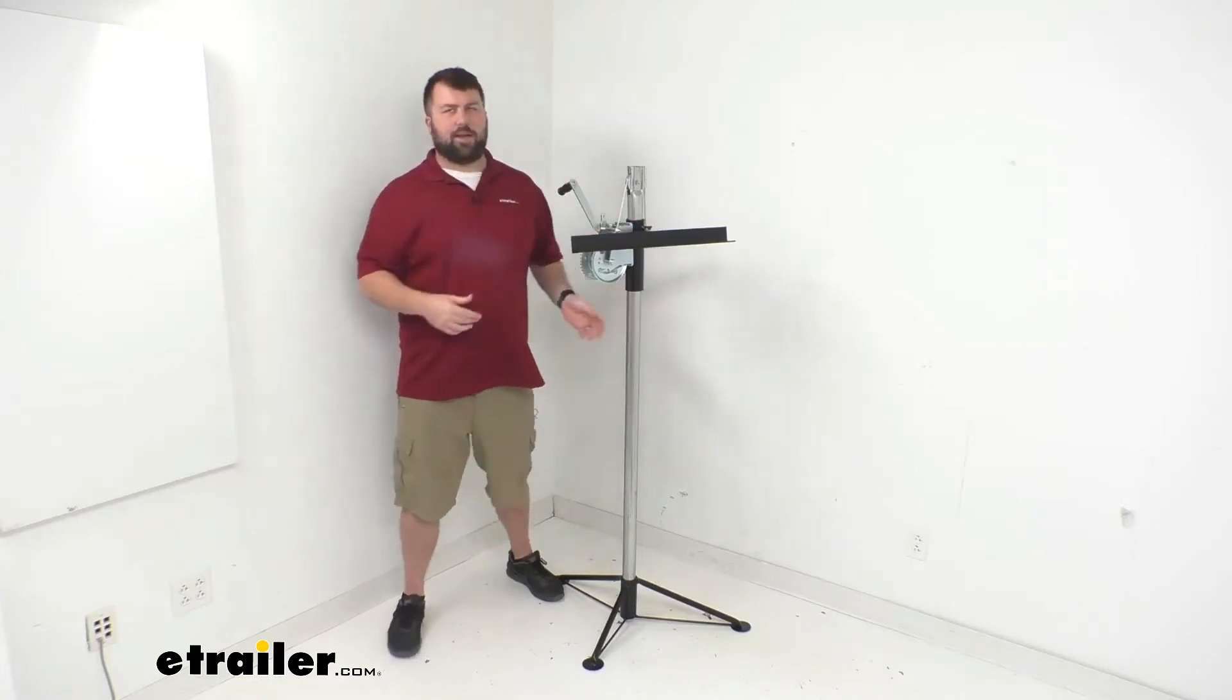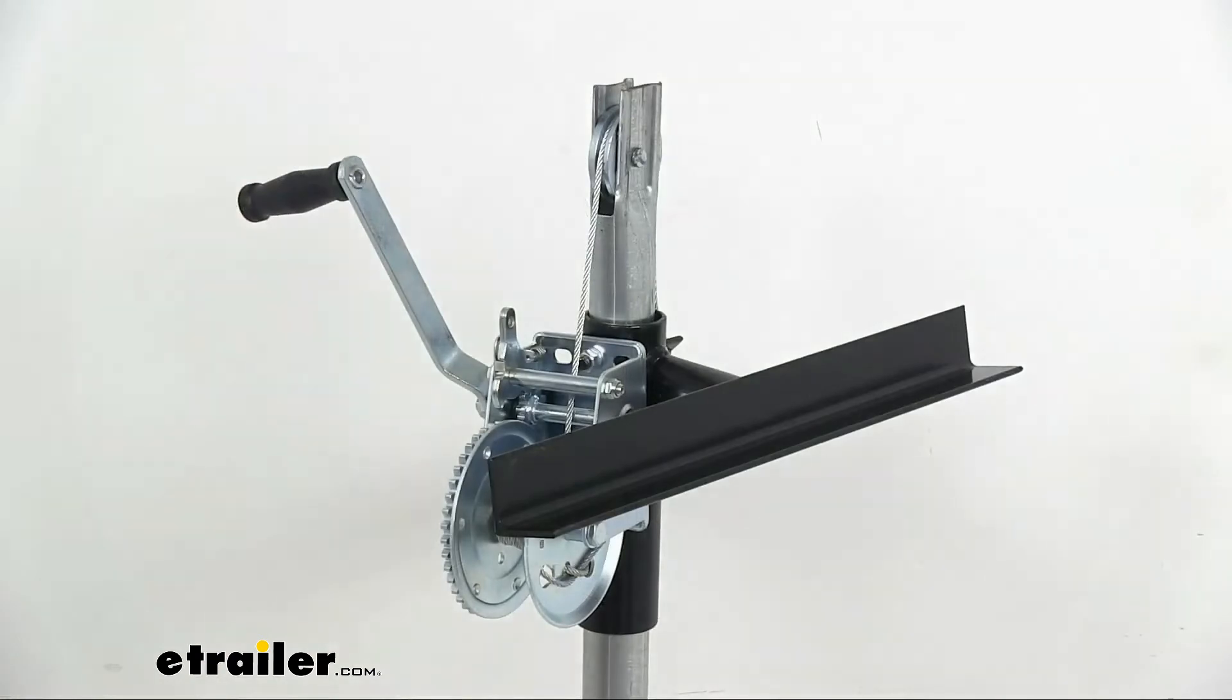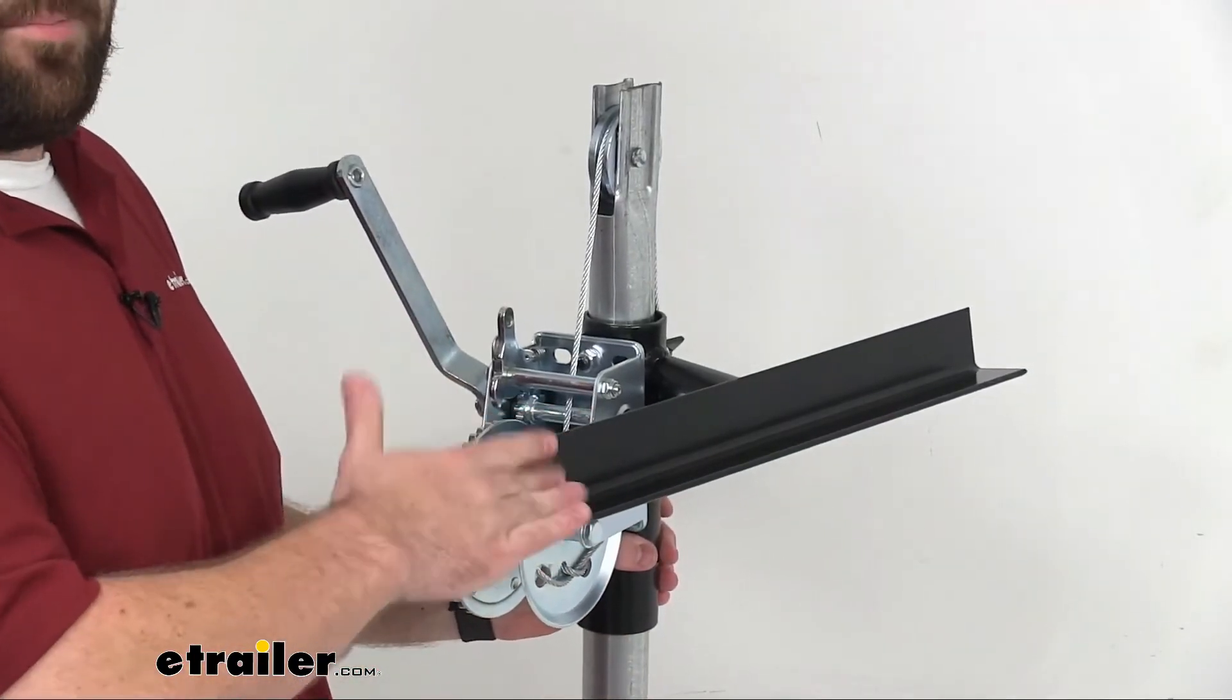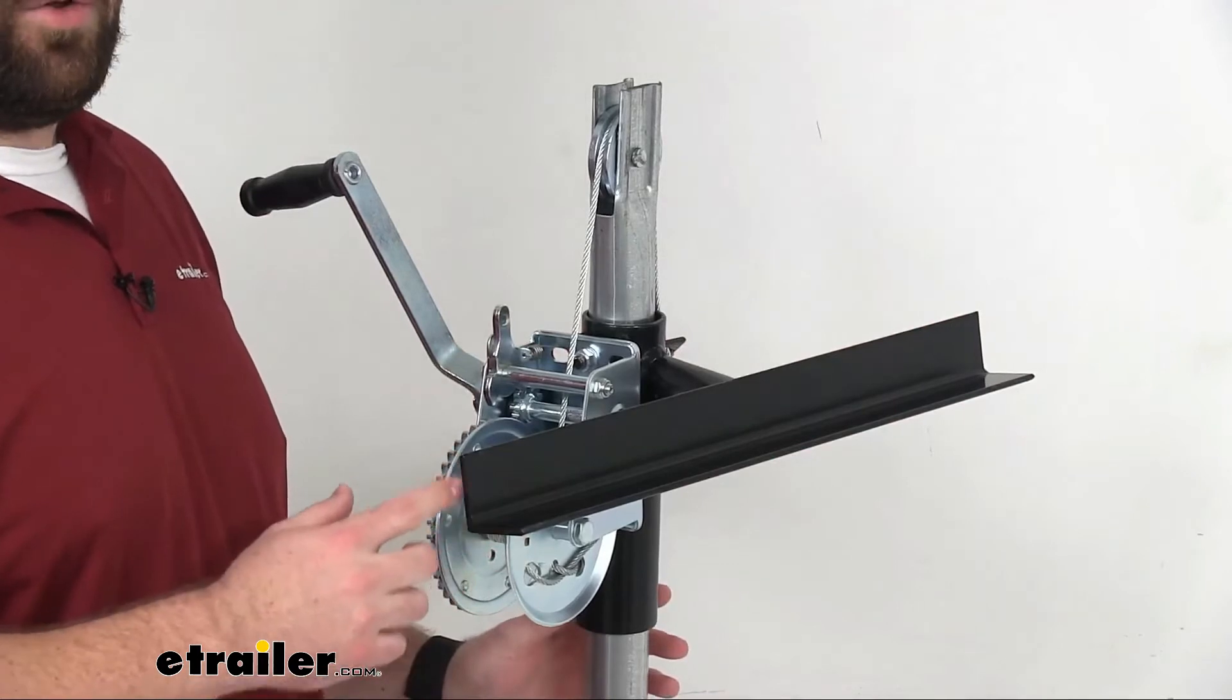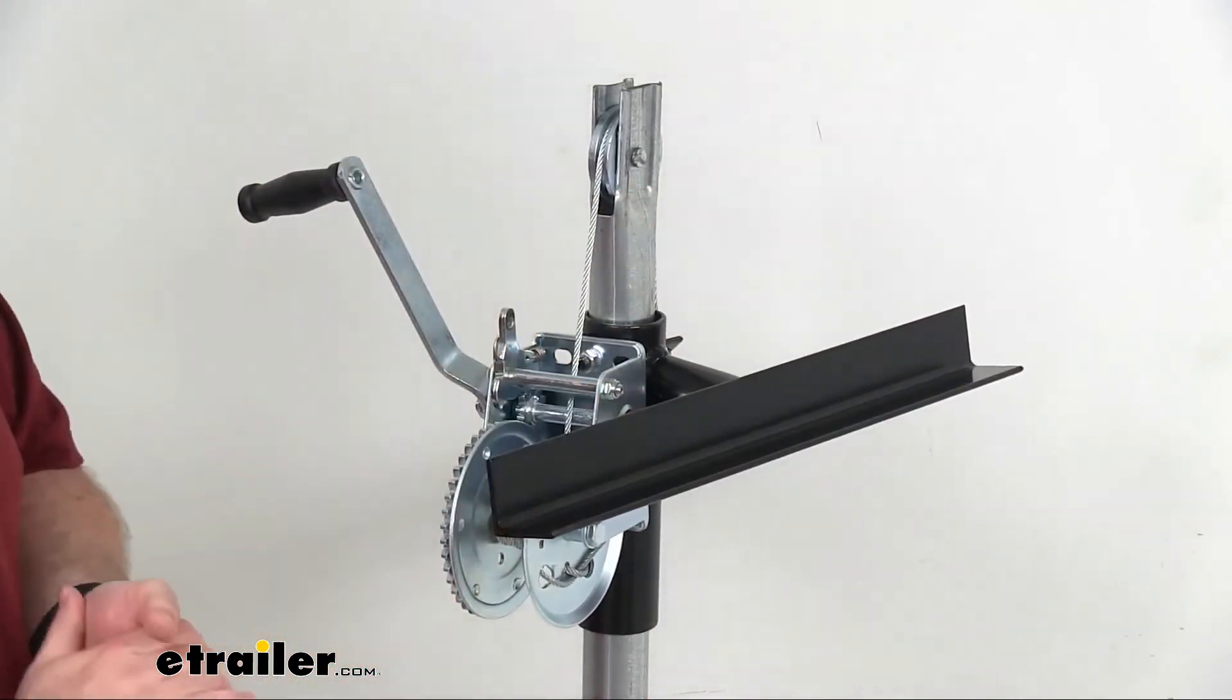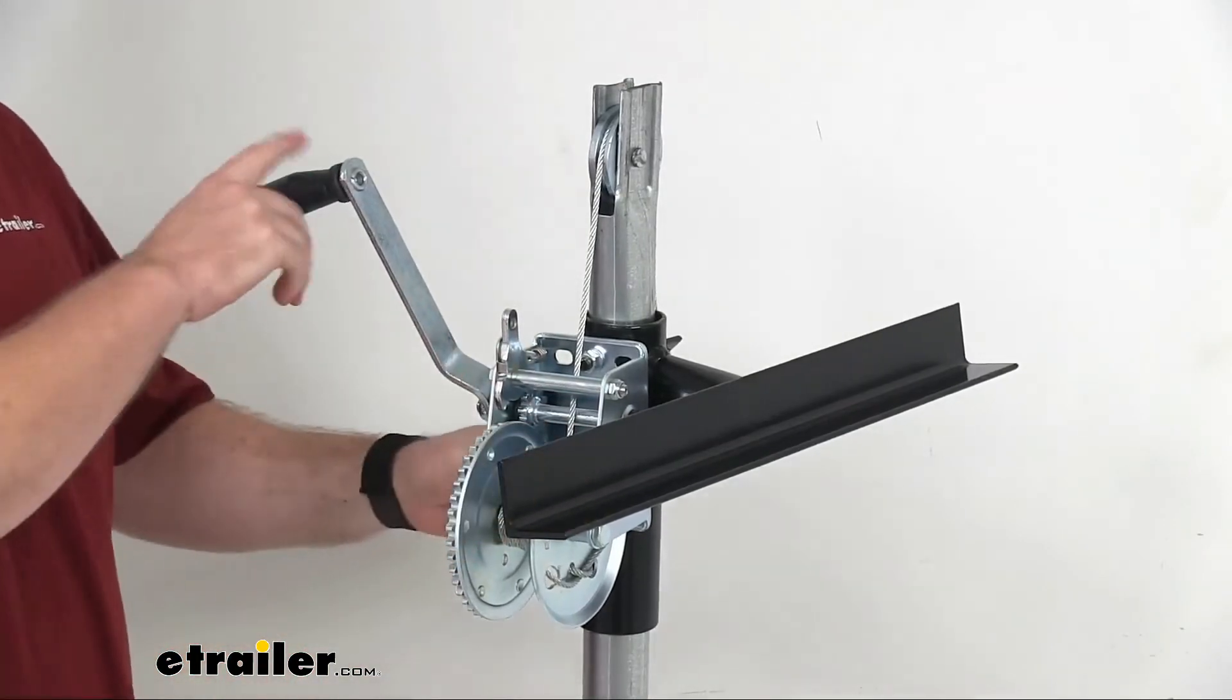So this L-shaped bracket here is what's going to support your camper. You'll sit the bottom and side of your camper here in this L-shaped bracket. This is 21 and a half inches long, two inches wide, and two inches tall. So very easy to get put in place under your camper and it's going to support that weight.